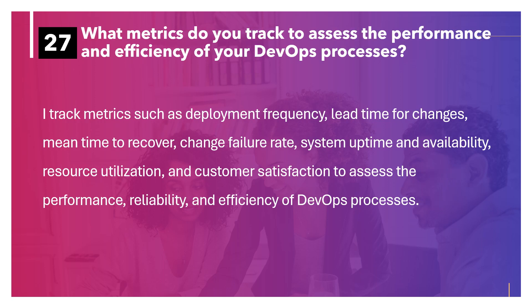What metrics do you track to assess the performance and efficiency of your DevOps processes? I track metrics such as deployment frequency, lead time for changes, mean time to recover, change failure rate, system uptime and availability, resource utilization, and customer satisfaction to assess the performance, reliability and efficiency of DevOps processes.